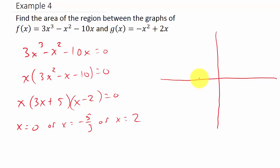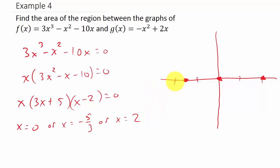Let's go ahead and put negative 1, negative 2, 1, and 2 on the axis and plot the zeros: 0, negative 5 thirds, and 2. We want to see if the graph is positive or negative to the left of negative 5 thirds. Plugging in negative 2 gives negative 2 times negative 1 times negative 4 — a negative times a negative times a negative — so the graph is negative there.